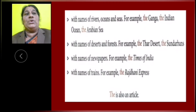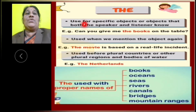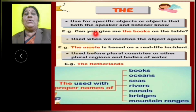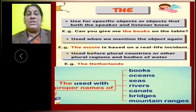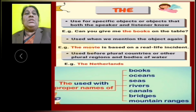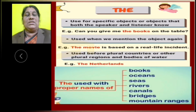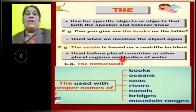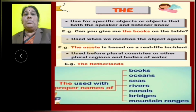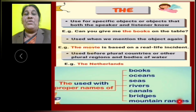Children, let us revise once again the uses of THE. THE is used for specific objects or objects that both the speaker and the listener know. THE is used when we mention the objects again. THE is used before plural countries or other plural regions and bodies of water — for example, the Netherlands. THE is used with proper names of books, oceans, seas, rivers, canals, bridges, mountain ranges, etc.